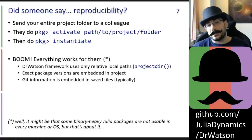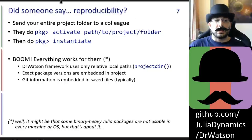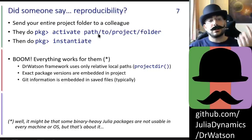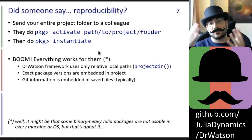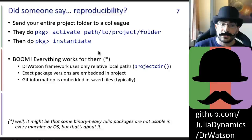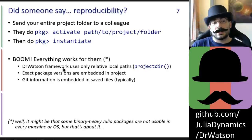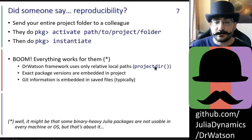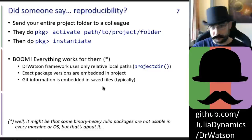Let's talk about reproducibility. You send your entire project folder to a colleague, and they use Julia's package manager to activate the path to the project and then run instantiate, which installs all the packages necessary to run your project. And just like that, everything that works for you works for them. This happens because the Dr. Watson framework uses only relative local paths via the projectdir functions, the exact package versions are embedded within the project, and git information is embedded in saved files.